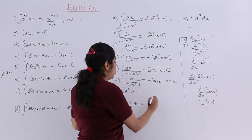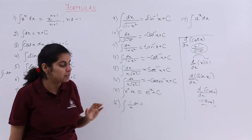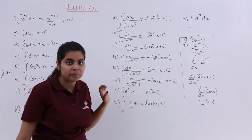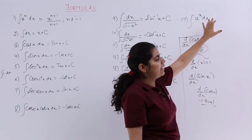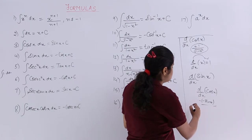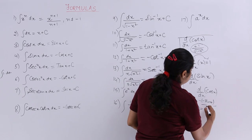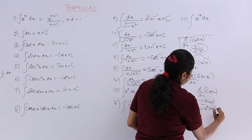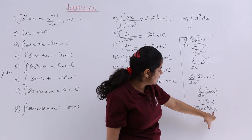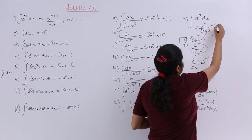Next, e raised to the power x: differentiation and integration give the same result, since the derivative of e^x is e^x itself. Then, 1 upon x is the result of differentiating log x, so integration of 1/x equals log|x| plus c. Finally, for the exponential function a raised to the power x: the differentiation of a^x is a^x times log a, so a^x alone is obtained when log a goes to the denominator. Therefore, integration of a^x equals a^x upon log a plus c.